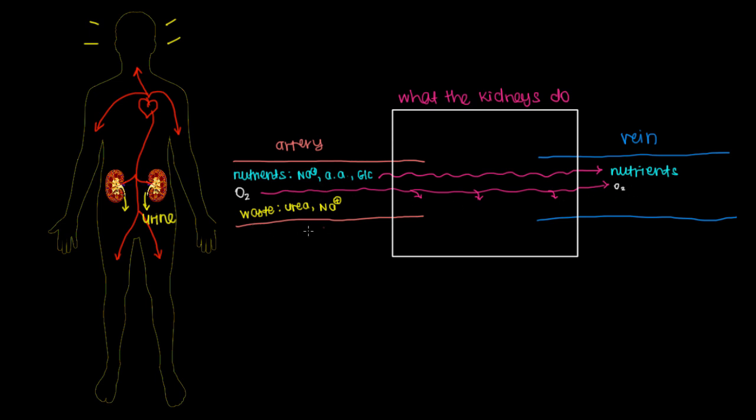And finally, the kidneys want to take all the waste products your arterial blood brought to the kidney and hold onto it. Make it so that this stuff does not end up in the venous outflow. And by collecting these waste products, the kidneys will effectively produce your urine.